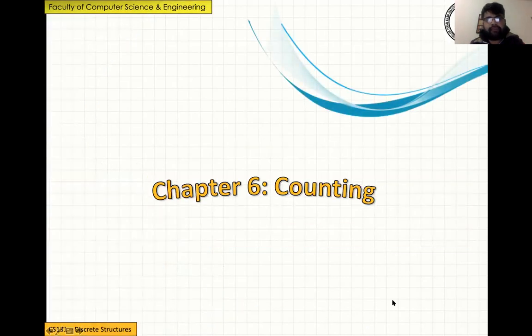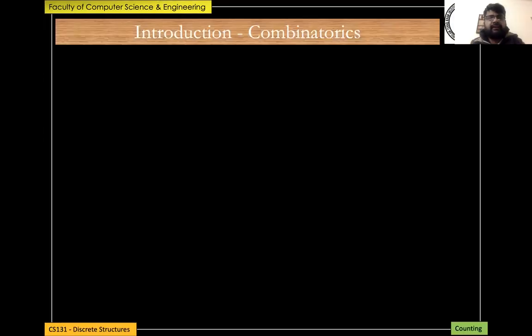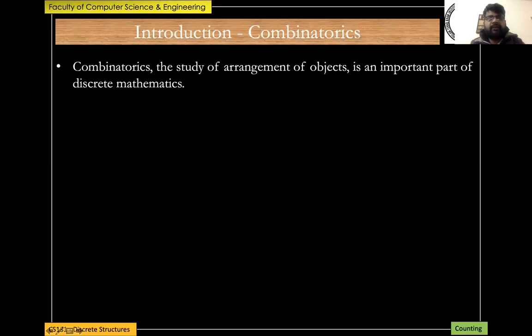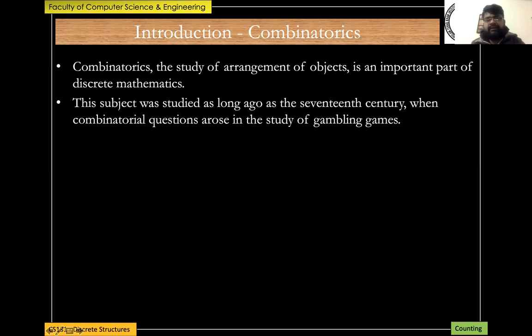What is counting? The basic intro for chapter six counting is that the topic of combinatorics is being discussed in this chapter. Combinatorics is basically nothing but the study of arrangement of objects, and the arrangement of objects is an important part of discrete mathematics. This subject was studied as long ago as the 17th century when combinatorial questions arose in the study of gambling games.